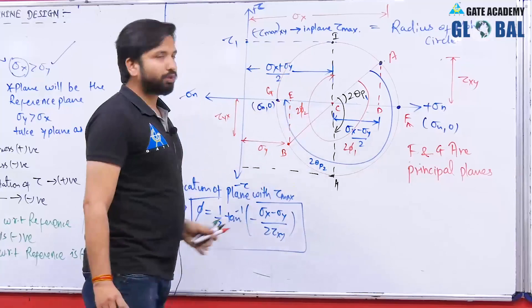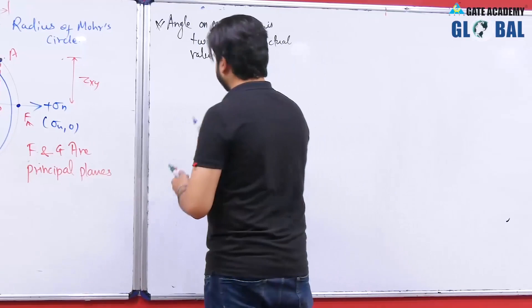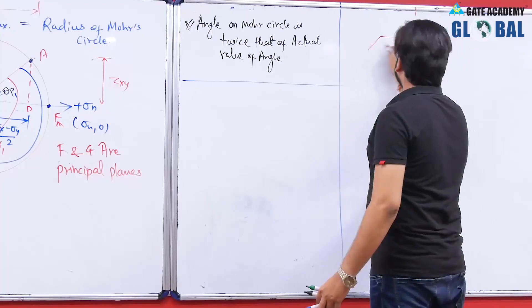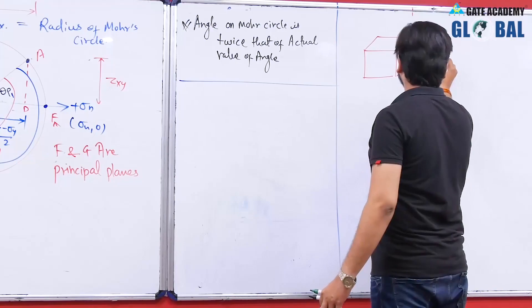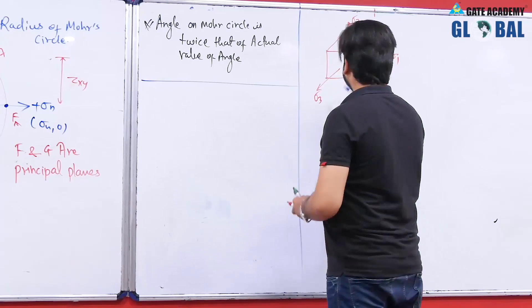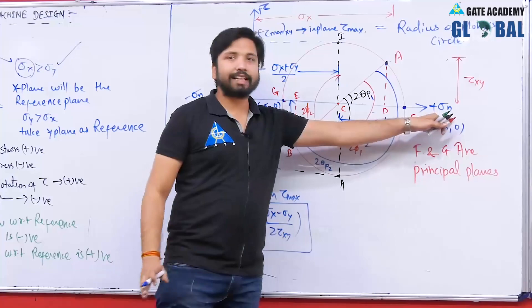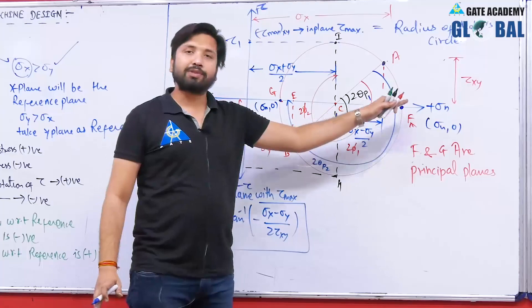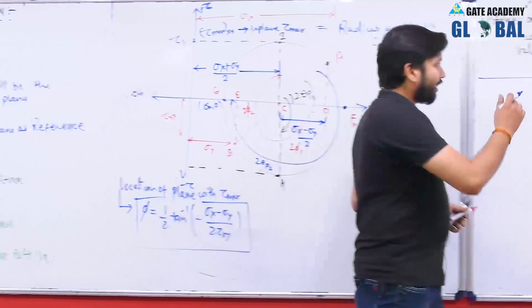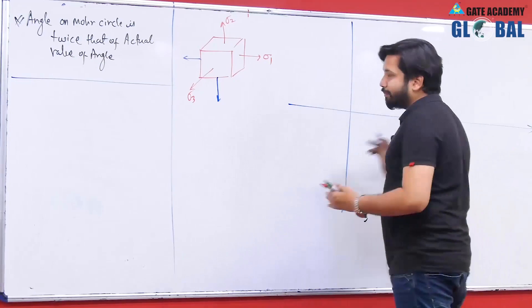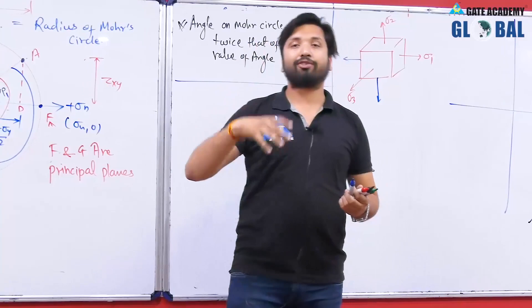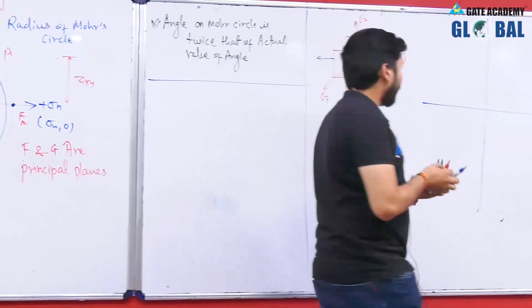This is the approach to draw the Mohr's circle. Now, for a three-dimensional state of stress, we will have three principal stresses: sigma 1, sigma 2, and sigma 3. We can draw three Mohr's circles corresponding to the three planes — the xy plane, the yz plane, and the zx plane — giving three separate Mohr's circles.